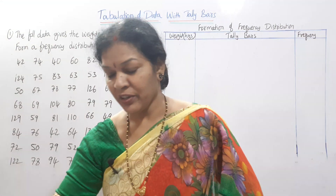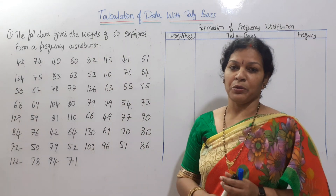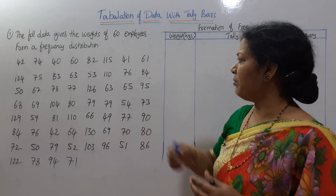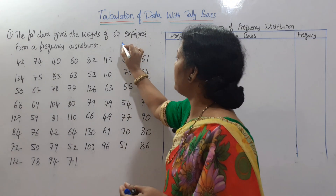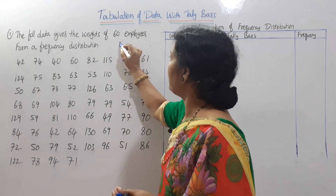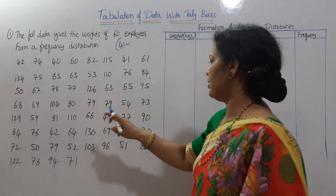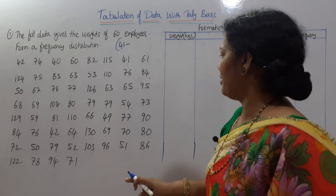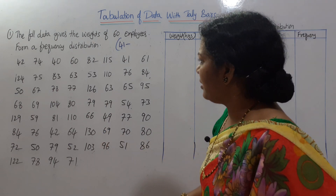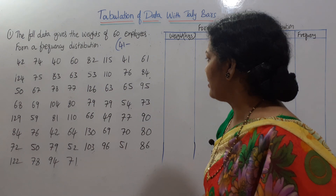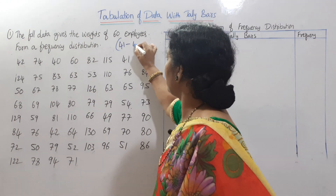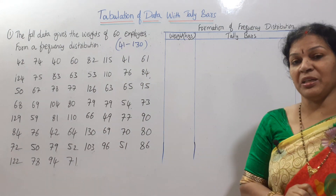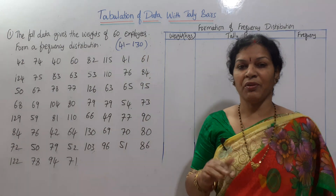First, we find the minimum number, which is 41, and the maximum number, which is 130. So the minimum is around 41, and we will start our class intervals from 40.